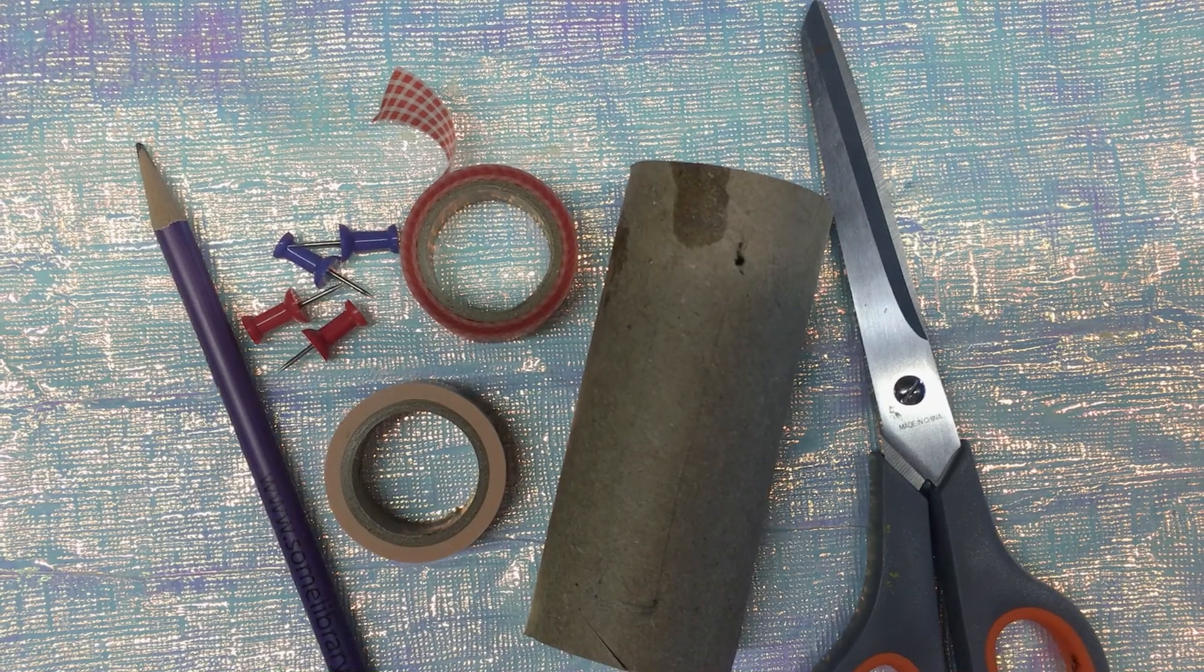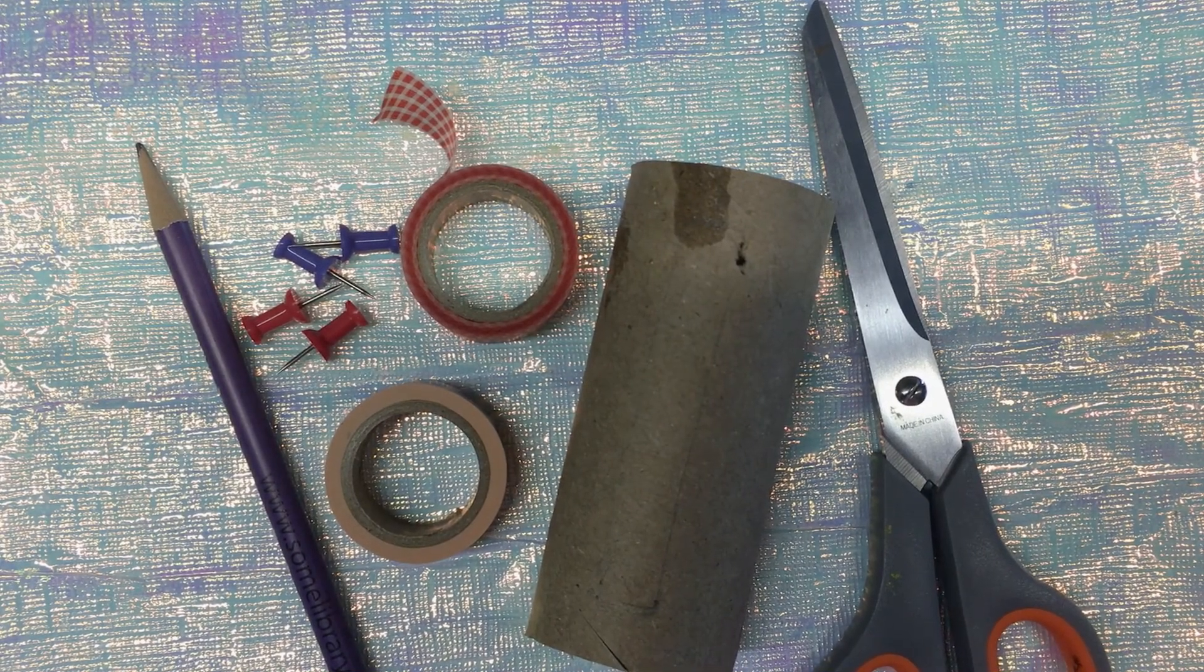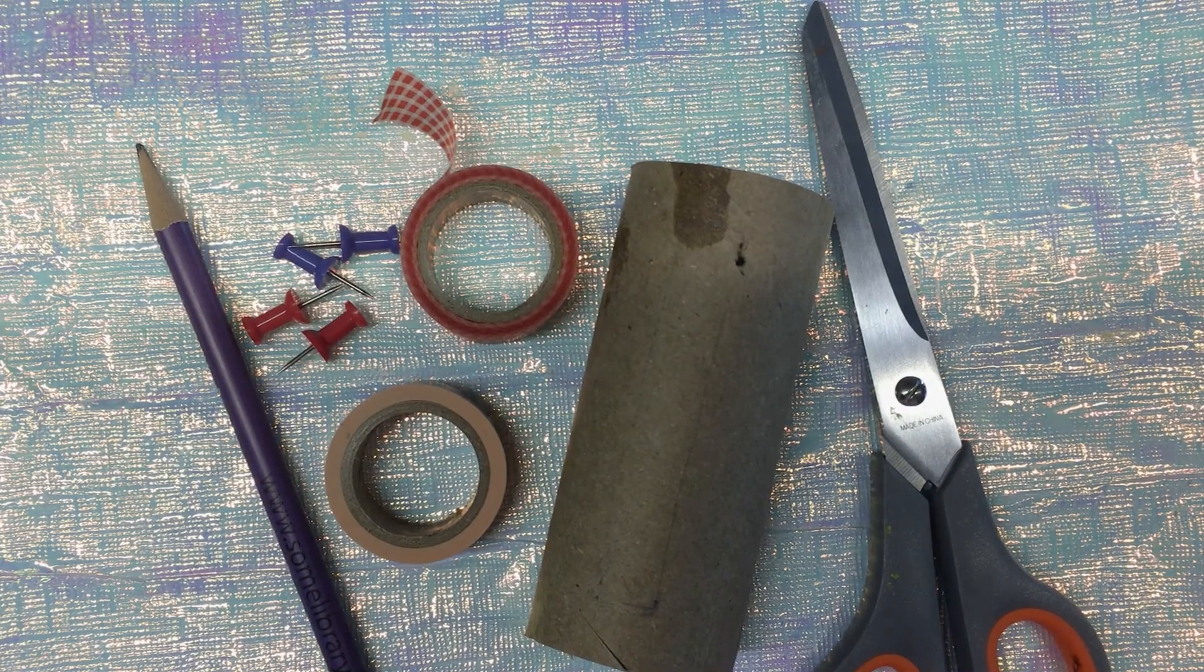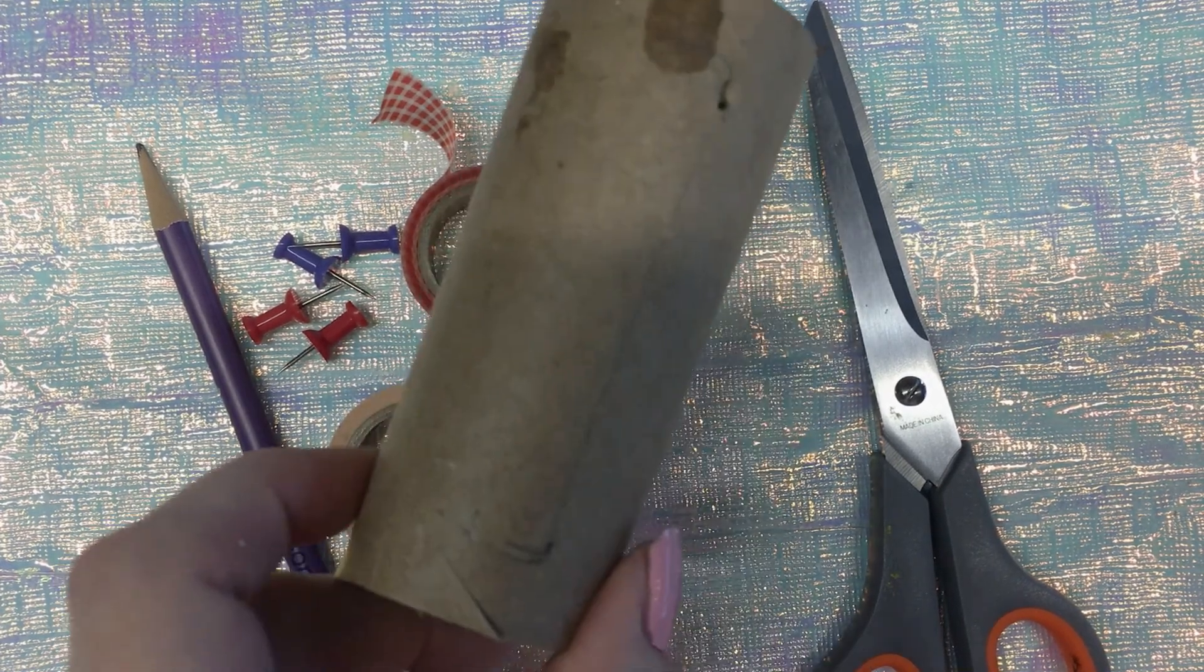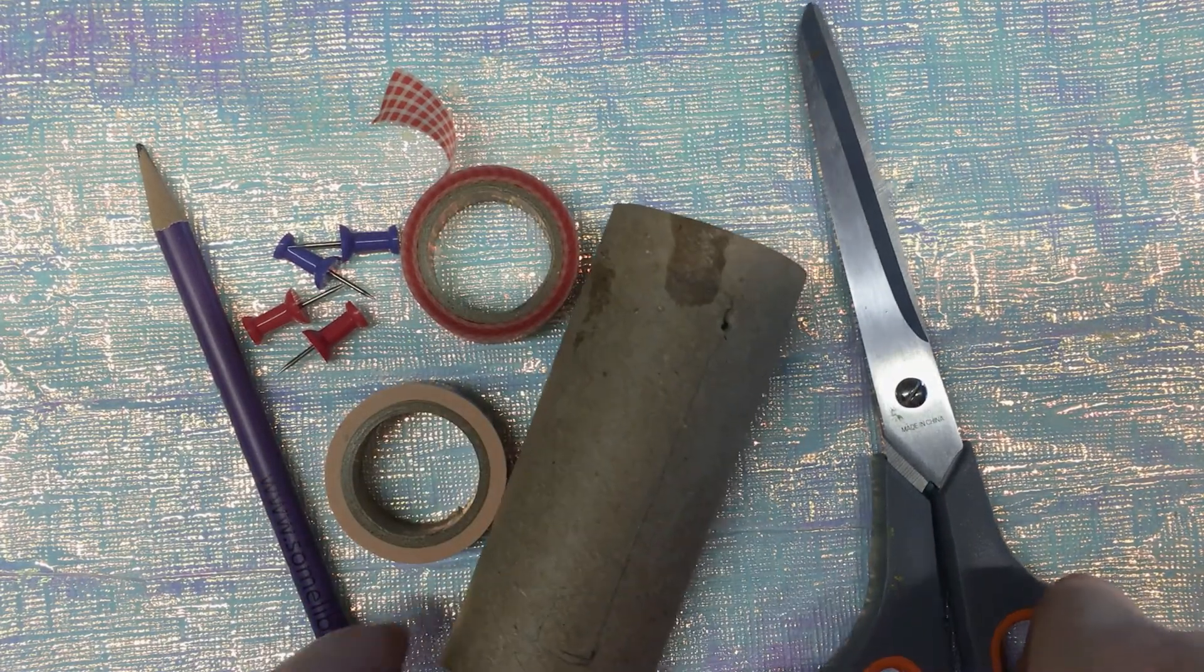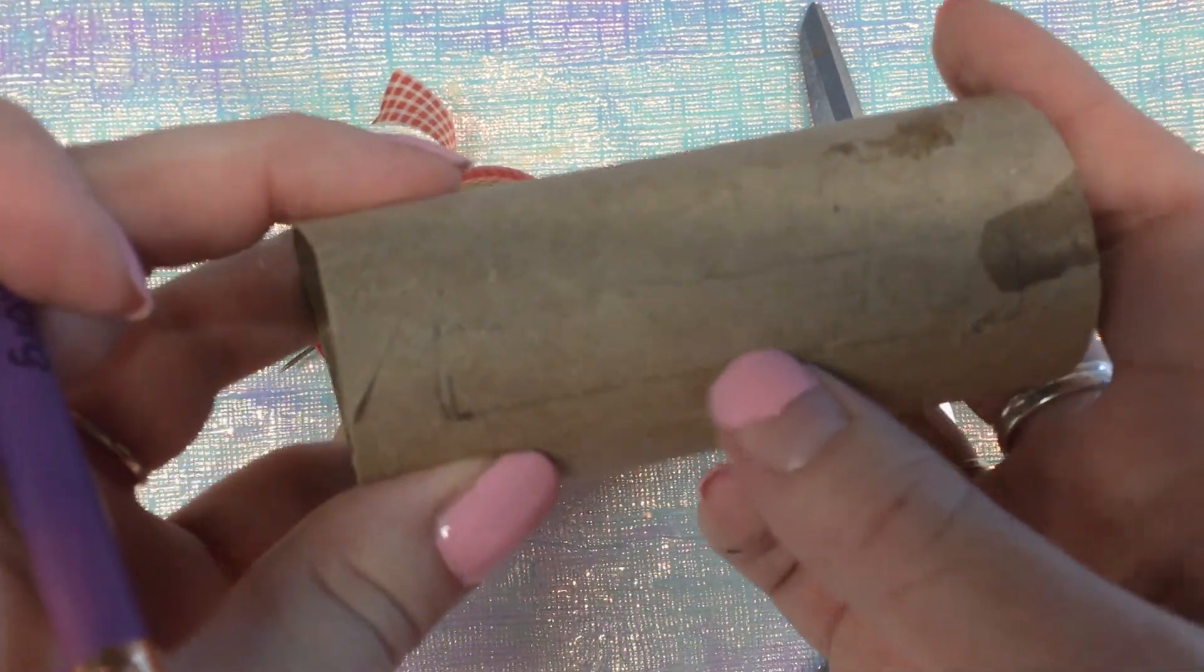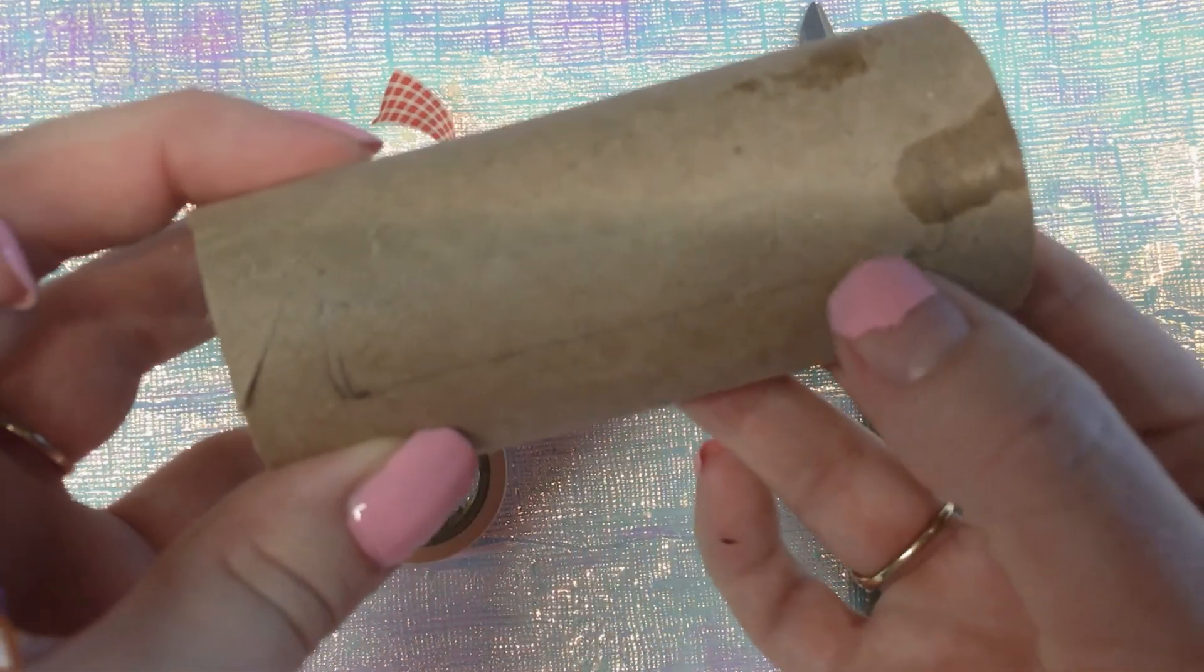Hi everyone, today I'm going to show you how to make a DIY phone prop. First, you're going to need your toilet paper roll and a pencil because you're going to need to trace your phone, the rectangle shape, on the toilet paper roll, which I have already done.